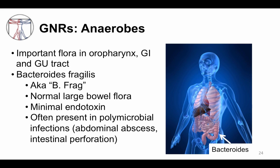The last important class of gram-negative rods we'll talk about are anaerobes. Anaerobes are important normal flora at many sites of the body, including the oropharynx, the GI, and the GU tracts. They exhibit incredible diversity, but only a small number cause disease. Keep in mind that gram-positives can also be anaerobic. Bacteroides fragilis — which goes by the stage name B-frag — is the most important anaerobe. Anaerobes can generally be divided into above-the-diaphragm and below-the-diaphragm species. B-frag is exclusively below the diaphragm and typically lives in the large bowel. It has minimal endotoxin but is often present in polymicrobial infections such as abdominal abscesses that can form after intestinal perforation.